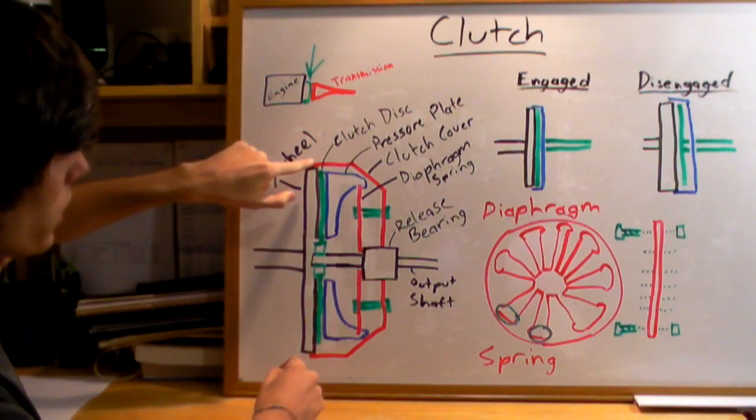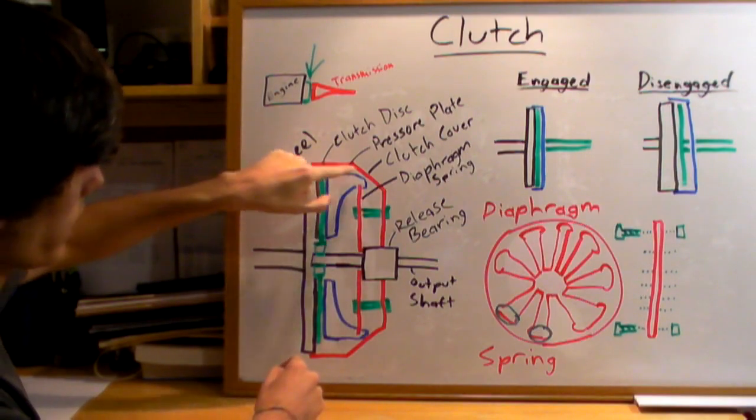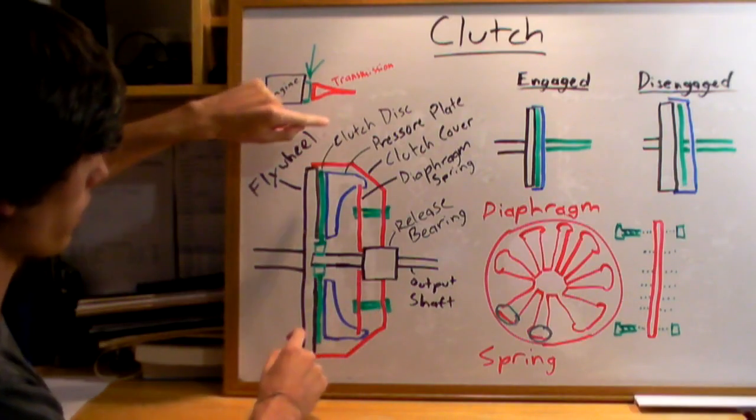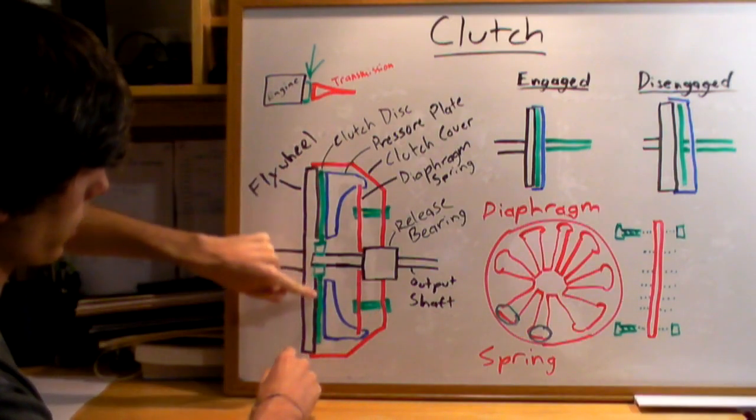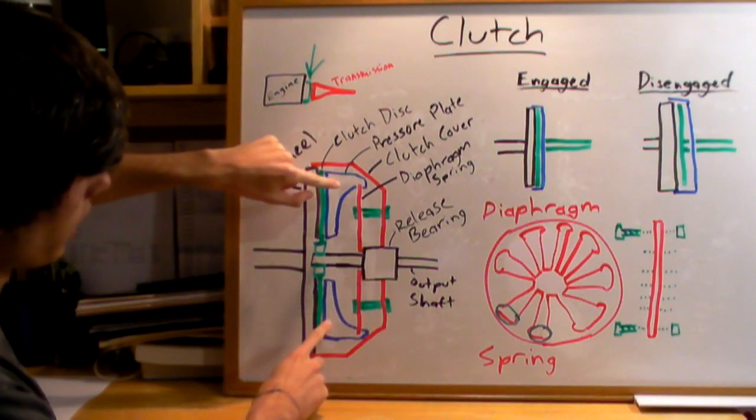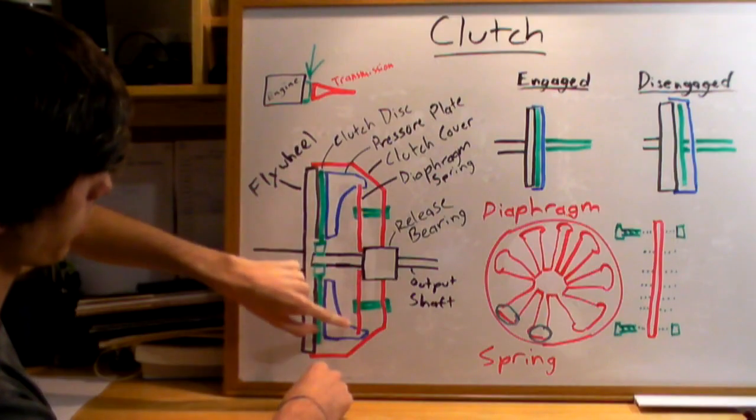Connected to the flywheel is this clutch cover here in red, and within the clutch cover you've got the clutch disc that's here in green, you've got a pressure plate in blue, and you've got a diaphragm spring.